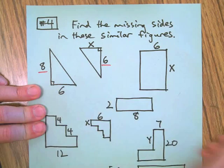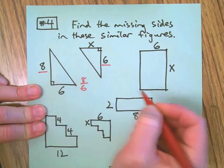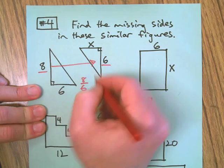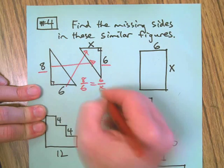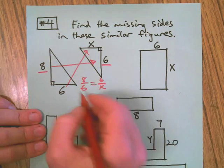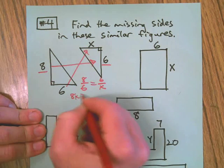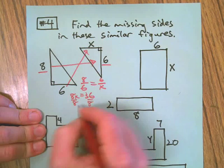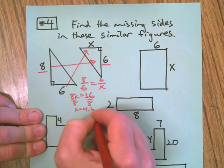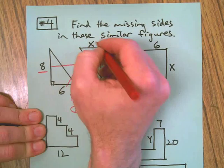So there's eight is to six, working this way, as six is to X. Got to keep them in the same order or it will not work. Cross multiply: eight times something equals 36. Divide both sides by eight. X equals 4.5. That's the missing side.